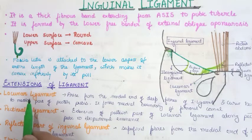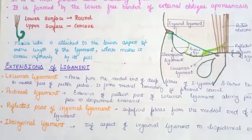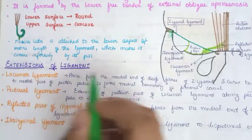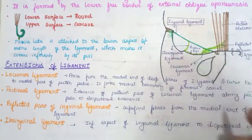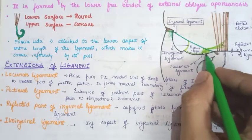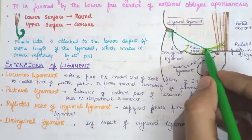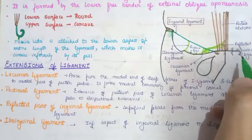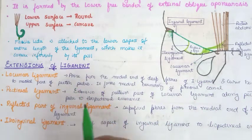The lacunar ligament is very important because it forms the medial boundary of the femoral canal. The lacunar ligament arises from the medial end from the deep fibers of the inguinal ligament and curves backwards to attach to the pecten pubis. The reflected part of the inguinal ligament arises from the superficial fibers of the medial end of the inguinal ligament, while the lacunar ligament arises from the deep fibers and attaches to the pecten pubis.